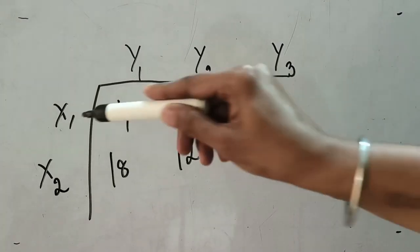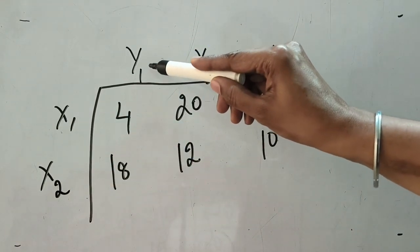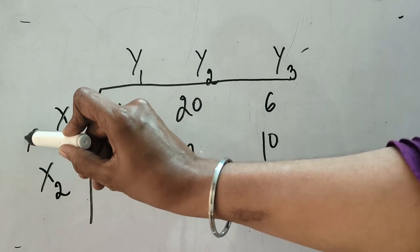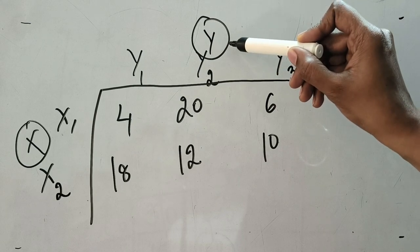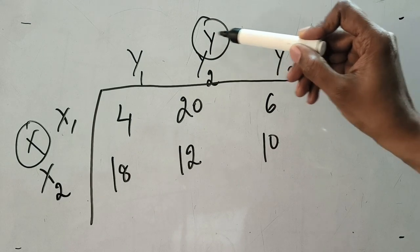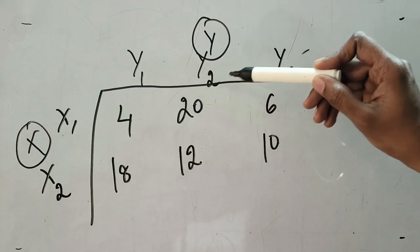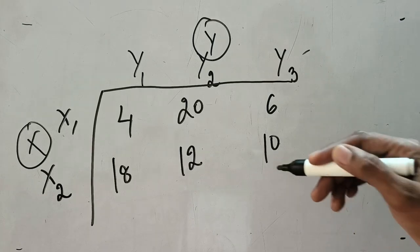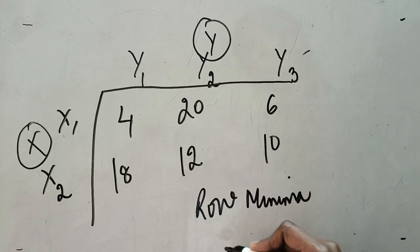In this question, we have two players: Player X and Player Y. Player X has two strategies — X1 and X2 — while Player Y has three strategies — Y1, Y2, and Y3. Player X is always the maximizing player, and Player Y is the minimizing player. To apply the pure strategy method, we use the principle that row minima should equal column maxima.